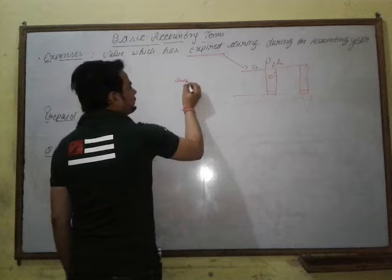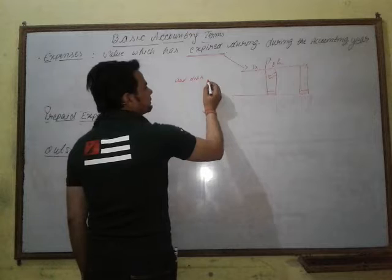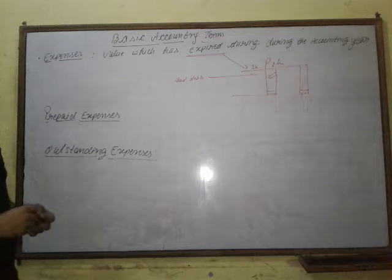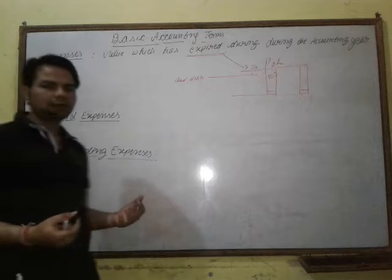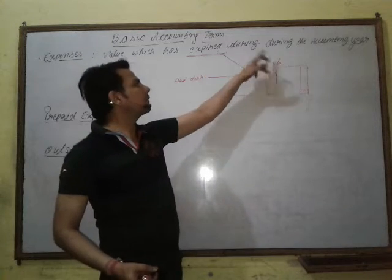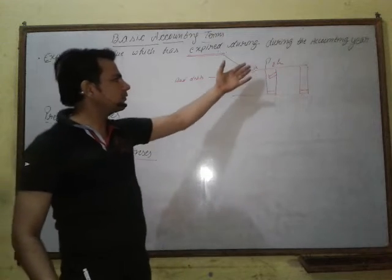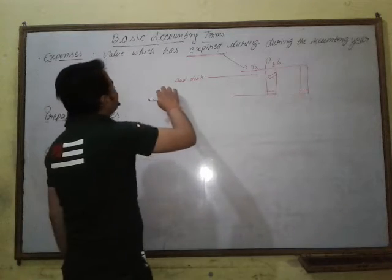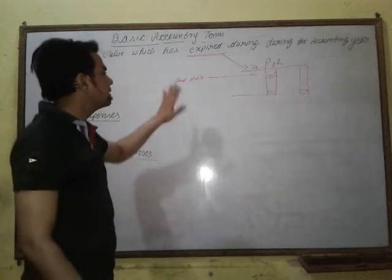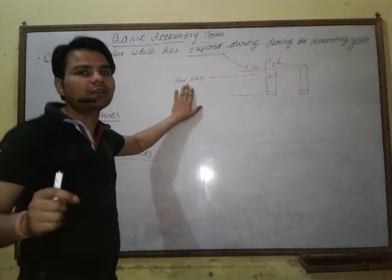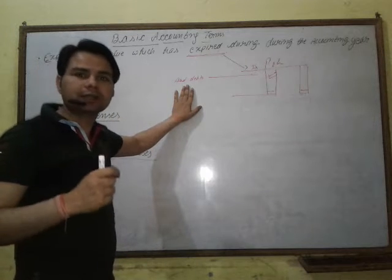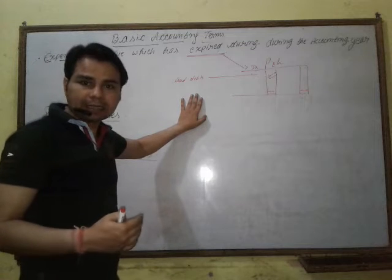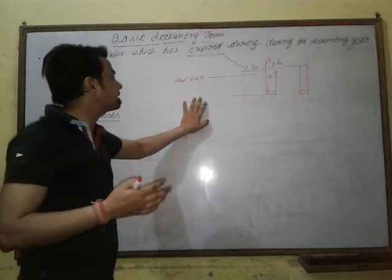Another example is bad debt — the amount which is not to be recovered from customers. If you sold goods on credit and the customer is not paying you, that is also shown as an expense. In other words, it is a loss that is being written off in one accounting year. Bad debt means the amount which cannot be received from customers who purchased goods from us on credit basis.